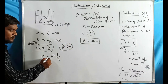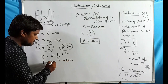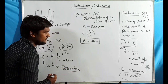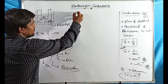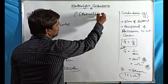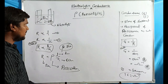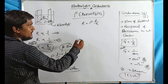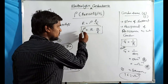Converting the proportionality to an equation, we introduce a constant Rho (ρ): R = ρ × L/A. Here R is resistance, L is the distance between the two electrodes, A is the cross-sectional area. The new term ρ is called resistivity, also known as specific resistance. According to IUPAC, the preferred term is resistivity. Rearranging: ρ = R × A/L.